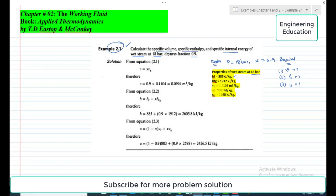And the specific internal energy at the saturated liquid line, which is uf, is 883 kilojoules per kilogram.